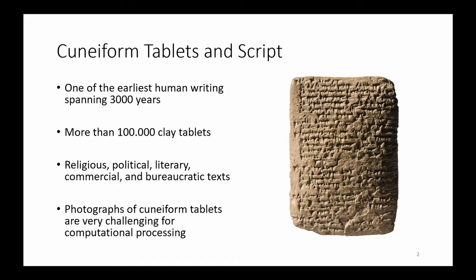Cuneiform script is one of the oldest human writing systems. It spans more than 3000 years. It is written by impressing a rectangular stylus into wet clay, leaving wedge-shaped impressions. Reading cuneiform from photographs is challenging. Only through the interplay of light and shadow, by holding and turning the tablets in sunlight, the writing becomes readable.